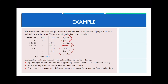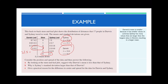For part A, it asks you to look at the stem-and-leaf plot and suggest why Darwin has a mean smaller than Sydney. The mean is impacted and influenced by outliers and larger values. Darwin has a smaller mean because the maximum value of Darwin is 35 kilometers, whereas Sydney's maximum value is 52 kilometers, and there are many more values in Sydney greater than Darwin's maximum. That's why Sydney has a greater average — Darwin's mean is smaller because it has smaller values in general.